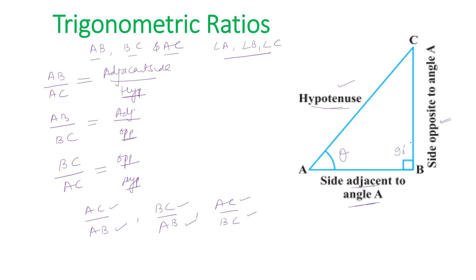Now we define the ratios with respect to theta. AB upon AC is the ratio of adjacent side to hypotenuse — this is known as cos theta, or cosine of angle A. BC upon AC is the ratio of opposite side to hypotenuse — this is known as sine theta, or sine of angle A.